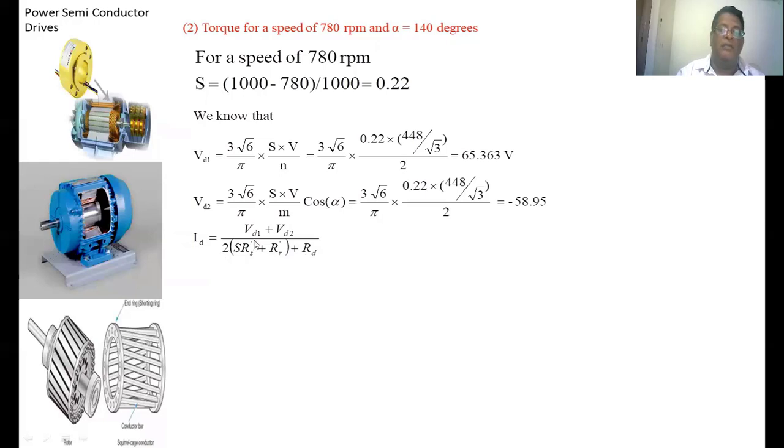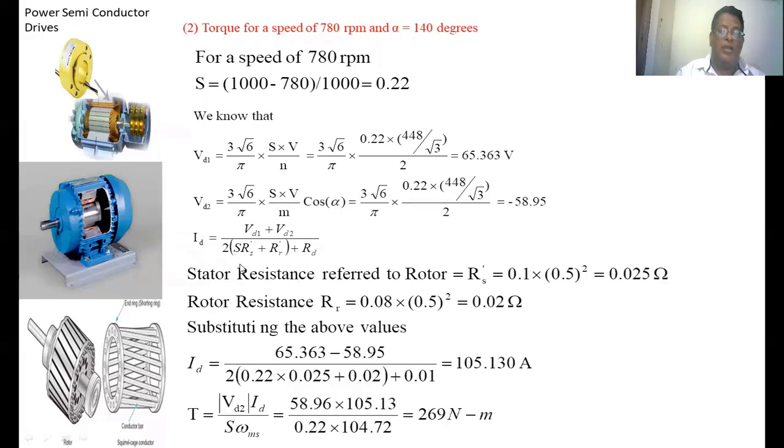We know the expression for DC link current: Id = (Vd1 + Vd2)/(2S(Rs' + Rr + Rd)). Here Rs' is the stator resistance referred to the rotor. In the numerical, the value is given referred to the stator, so we have to convert it: Rs' = 0.1·(1/2)² = 0.025Ω. Similarly, rotor resistance referred to rotor: Rr = 0.08·(1/2)² = 0.02Ω. Substituting all values in this expression, we get DC link current Id = 105.130A.